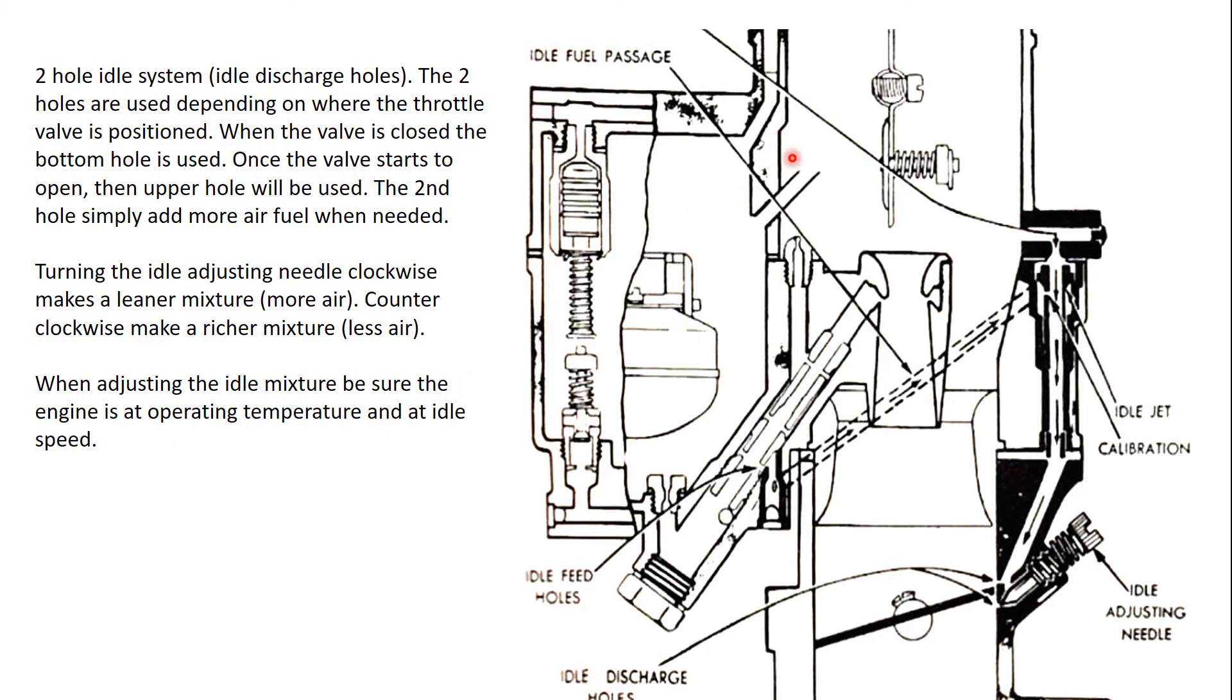This here is a cutaway view of a Zenith 228. It's a 228 because the idle screw is mounted down here at the bottom in the throttle body. A 28 has the screw up here, so that's how you can easily tell the difference.